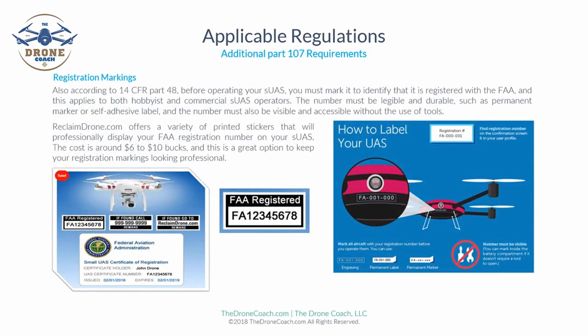According to 14 CFR Part 48, before operating your unmanned aircraft you must mark it to identify that it is registered with the FAA. This applies to both hobbyist and commercial UA operators. The registration number must be legible and durable, applied by permanent marker or self-adhesive label, and must be visible and accessible without the use of tools. The FAA does permit the number to be inside a battery compartment, but that compartment must be openable without tools in case the FAA performs a surprise inspection.